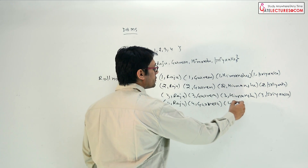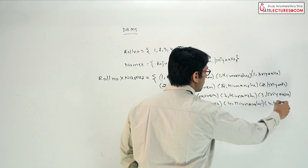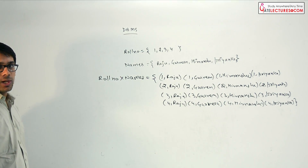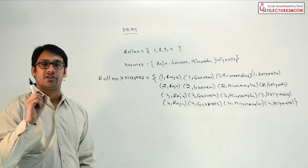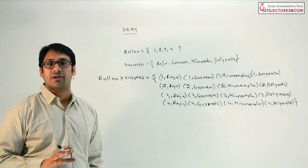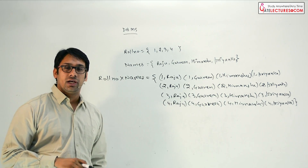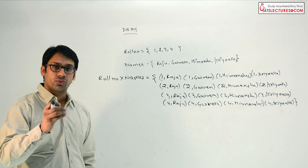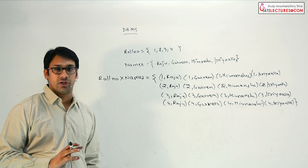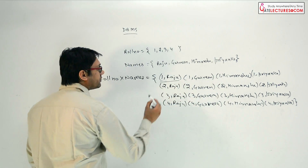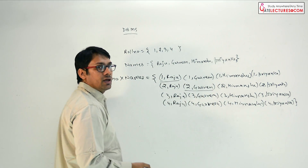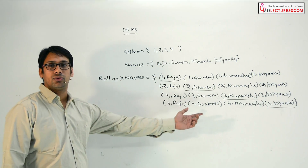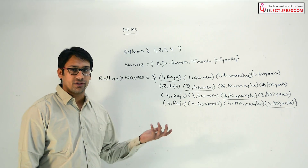You can see all these are the ordered pairs — that means these are all the ordered pairs of the cross product between roll number and names. Now when I say there is a relation, that means the relation is going to satisfy some kind of constraint. For example, in a classroom, all four students cannot have roll number one, all four students cannot have roll number two, and so on. There will be a student associated with each roll number only — for example, roll number one is only associated with Raju, roll number two is only associated with Gurveen, roll number three is only associated with Himanshu, and roll number four is only associated with Priyanka. All the other combinations are useless.